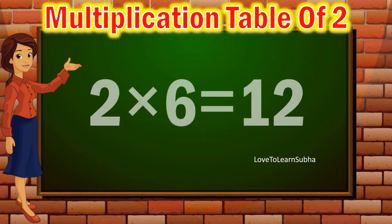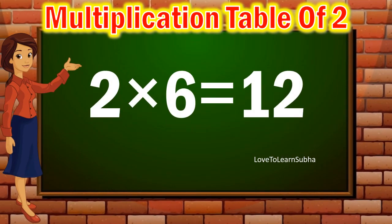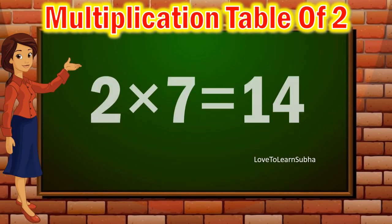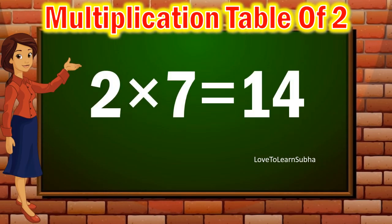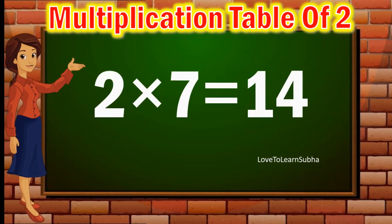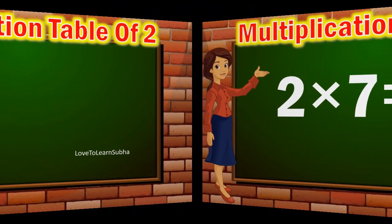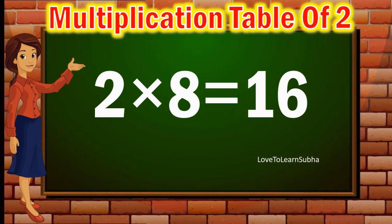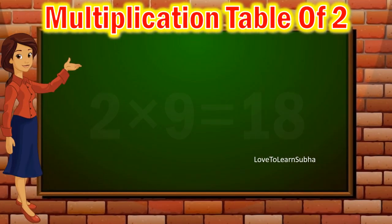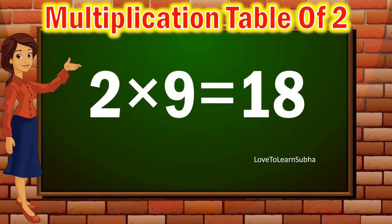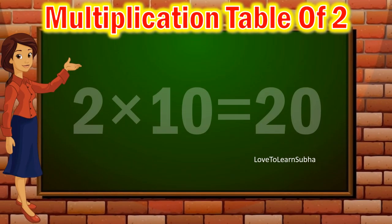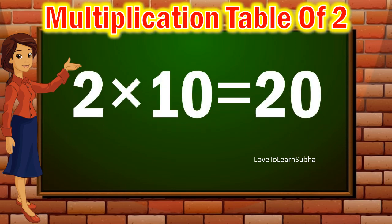2 6s are 12, 2 7s are 14, 2 8s are 16, 2 9s are 18, 2 10s are 20.